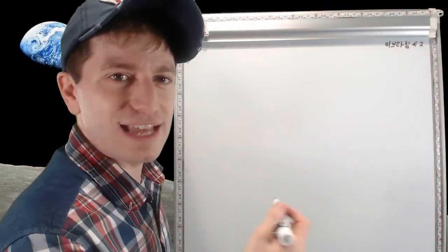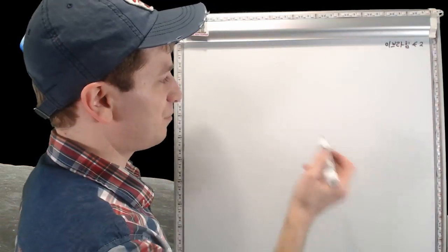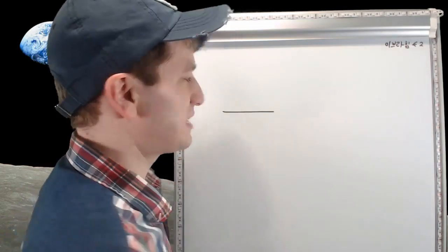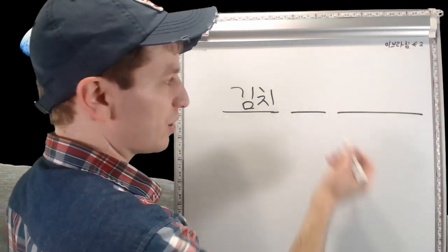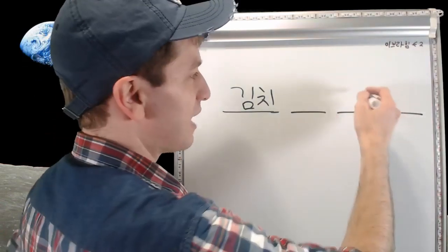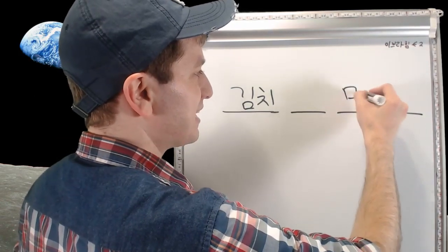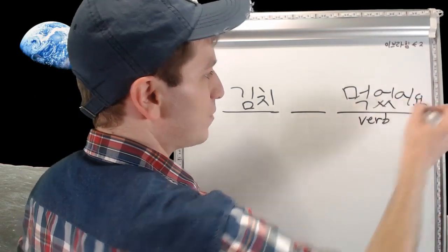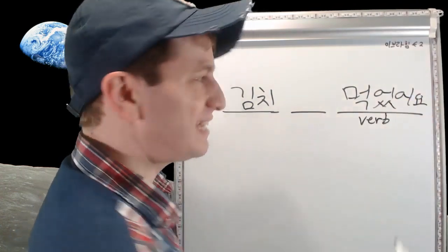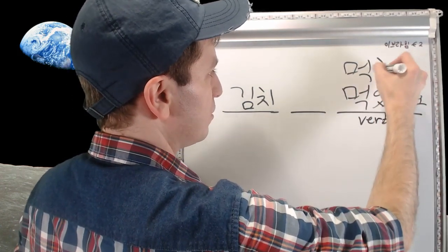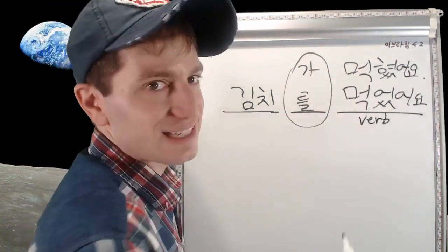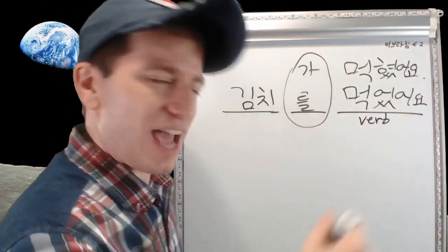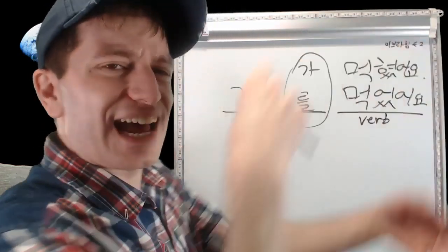The nice thing about passive in Korean is that the sentence order stays the same. With our example, whether it's 'I ate the 김치' or 'the 김치 was eaten,' we still have 김치, then a marker, then the verb. With active 먹었어요, with passive 먹혔어요 — the only thing that changed besides the marker is the verb. You don't have to reorganize the sentence.